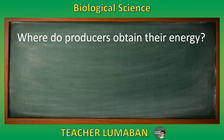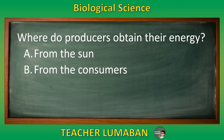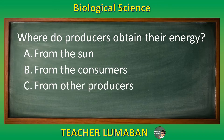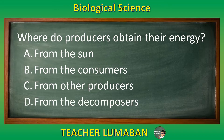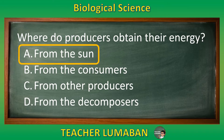Where do producers obtain their energy? Letter A: From the sun. Letter B: From the consumers. Letter C: From other producers. Letter D: From the decomposers. The correct answer is letter A — from the sun. The producers obtain their energy from the sun.